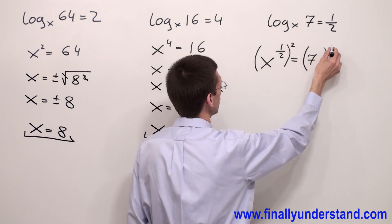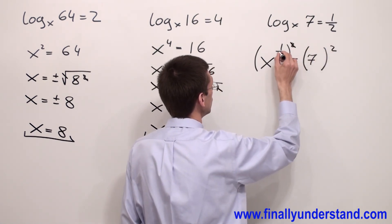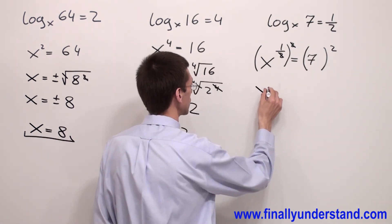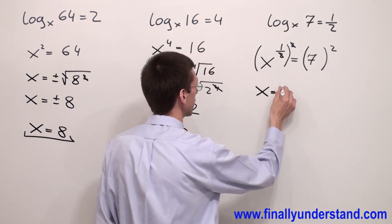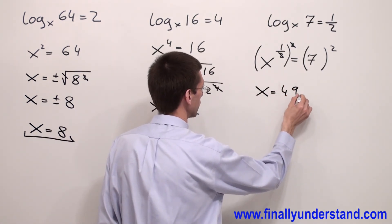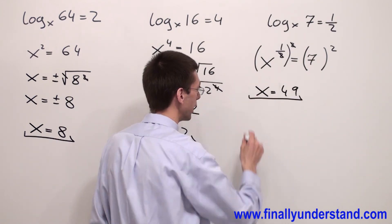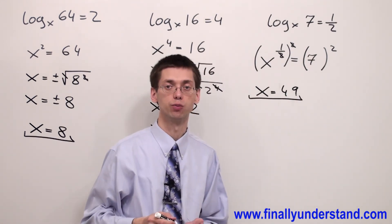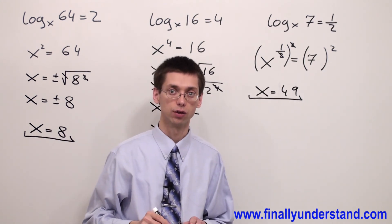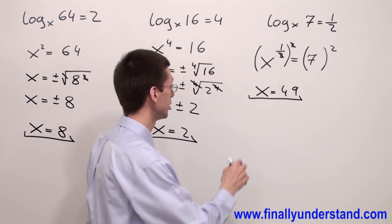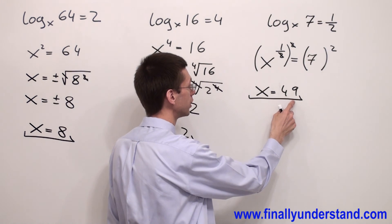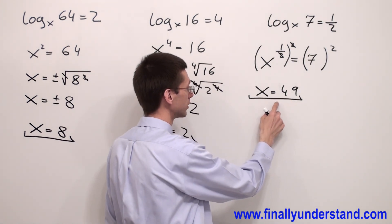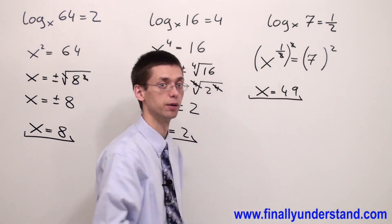I have to raise to the second power. 2 and 2 will cancel out and I have x is equal to 49. Keep in mind that the base has to be greater than 0 and different than 1. In our case, x is equal to 49. This is the correct answer to our problem.